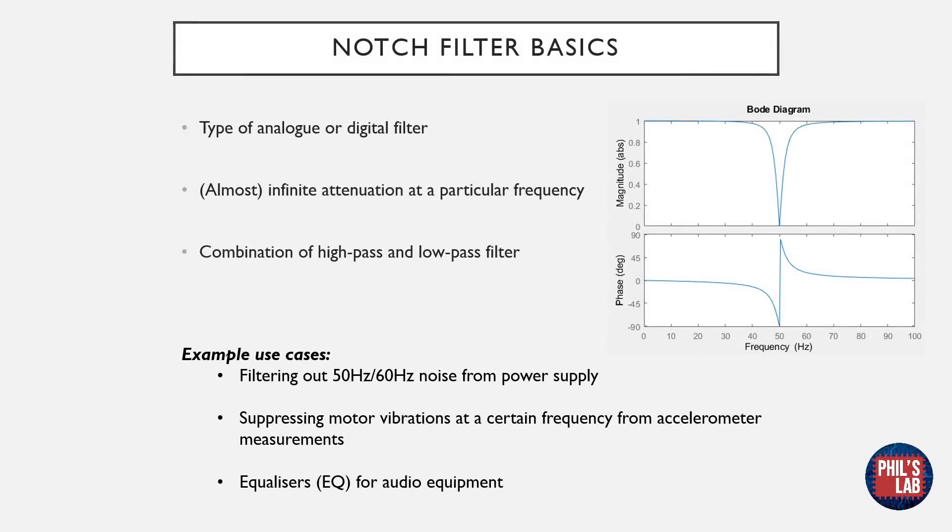So let's get started. Notch filters, sometimes also referred to as band stop or band reject filters, exist both in analogue electronics as well as in digital signal processing systems. We'll actually be looking at both in this video. Notch filters essentially exist to provide a near infinite attenuation to a certain frequency, that is they pass all frequency components except for a very narrow band of frequencies, which they attenuate severely.